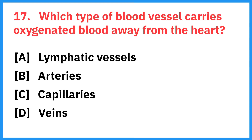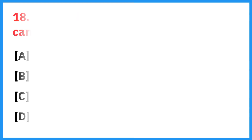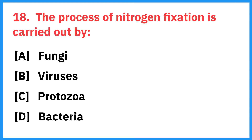Which type of blood vessel carries oxygenated blood away from the heart? Right answer is arteries. The process of nitrogen fixation is carried out by? Right answer is bacteria.